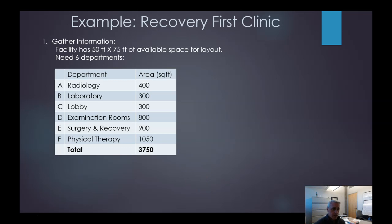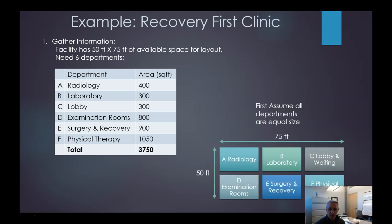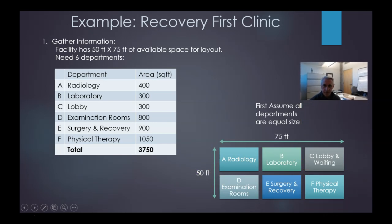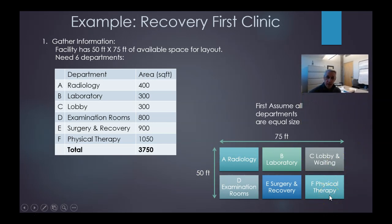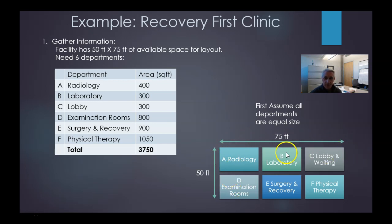The first and easiest assumption is that there are no disparities in area — that everything's the same size. If we do that, we can break out a square space and lay things out in a 50 by 75 foot facility, placing departments in order A, B, C, D, E, F. This assumes each department is roughly 25 feet in one direction, with the 75 feet broken into three equal parts of 25 feet across.